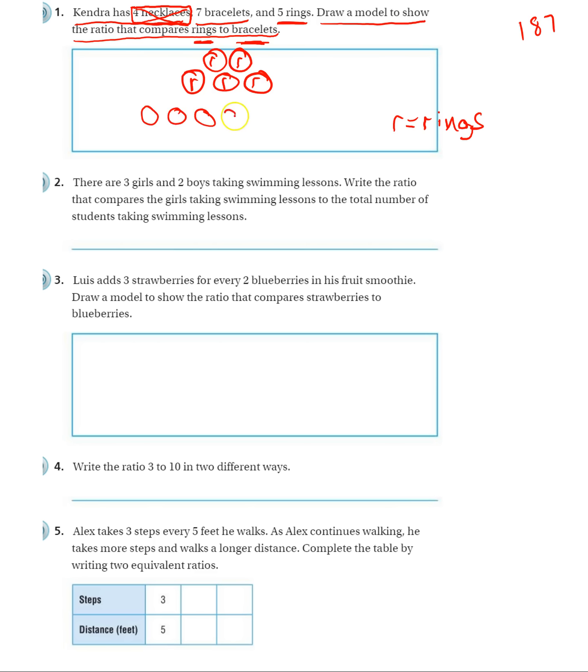And then I want my seven bracelets. One, two, three, four, five, six, seven. And I'm going to put a little B inside each of these to represent bracelets. And I'm going to put that on my key that the B means bracelets.